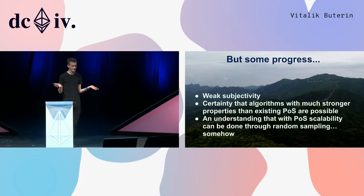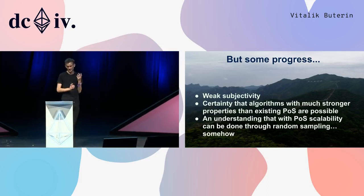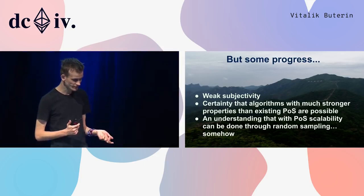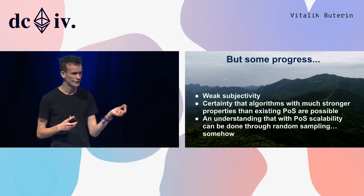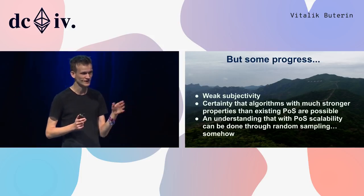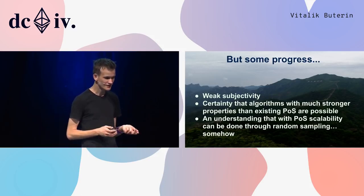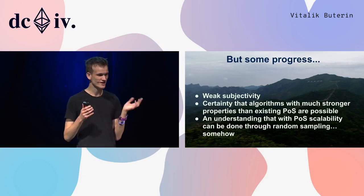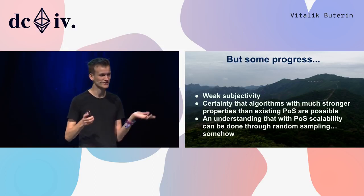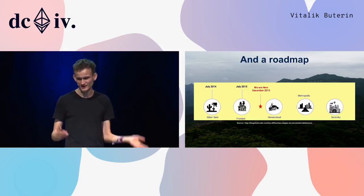In 2014 there was still some progress. There was the concept of weak subjectivity — a semi-formal security model that tried to capture under what conditions proof-of-stake deposits, slashing, and all of these concepts are actually secure. We also got more certain that algorithms with much stronger properties than existing proof-of-stake algorithms — things like pure coin and all its derivatives — were actually possible, and there was a growing understanding that some kind of proof-of-stake scalability strategy through random sampling was feasible, though we had no idea how.